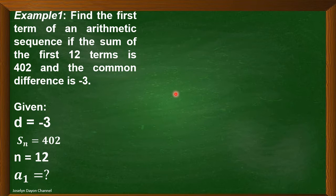So, for our solution, we have to make use of this formula. S sub n is equal to n over 2 times the quantity of 2a sub 1 plus quantity of n minus 1 times d.